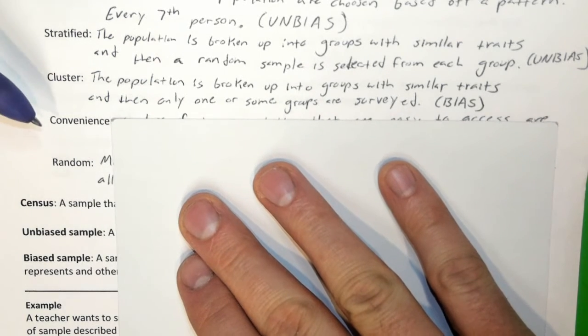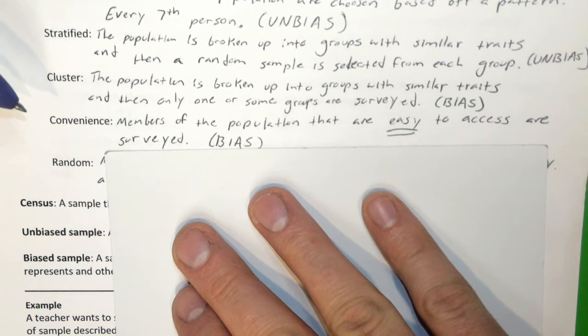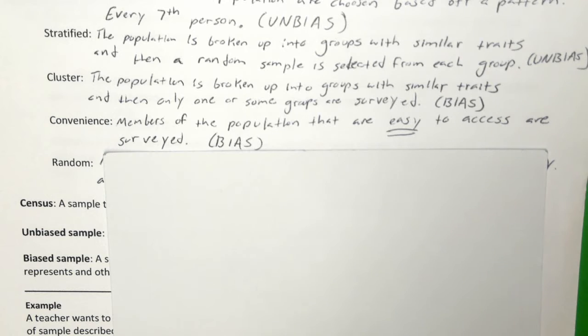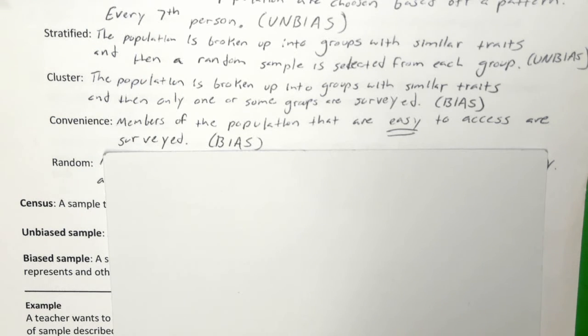Convenience is another very popular sampling method. Convenience makes it very easy for the surveyor because they talk to people that are easy to access — maybe people they're friends with, or people who are geographically close by. But the convenience sample always makes it easiest on the person asking the question, and that's bad. They need to do the extra work to ensure a good sample, so this is a bad sample most of the time.